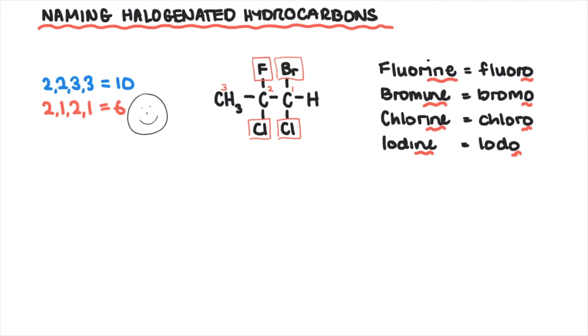So putting these branches in alphabetical order, it becomes 1-bromo, 1-2-dichloro, di because there's two of them, 2-fluoropropane.